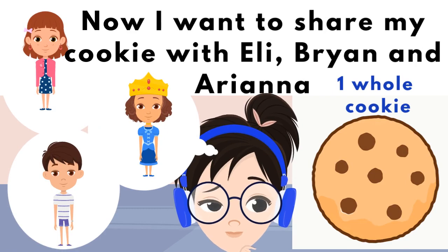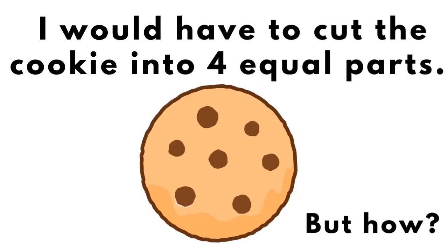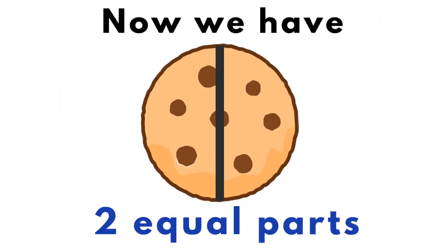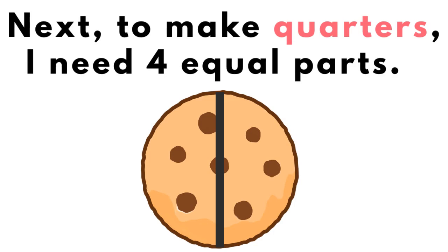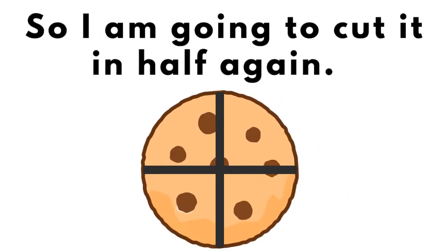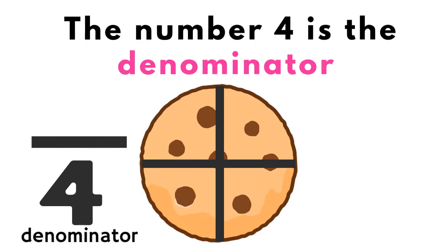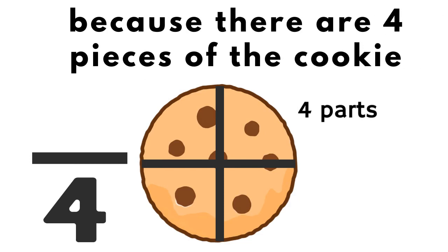Now I want to share my cookie with Ellie, Brian, and Ariana. I would have to cut the cookie into four equal parts. First, I will cut the cookie into two equal parts. Now we have two equal parts. Next, to make quarters, I need four equal parts, so I am going to cut it in half again. The cookie has been cut into four equal parts, which are called quarters. Quarters equal four equal parts. The number four is the denominator, because there are four pieces of the cookie.